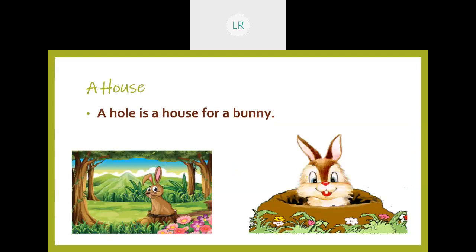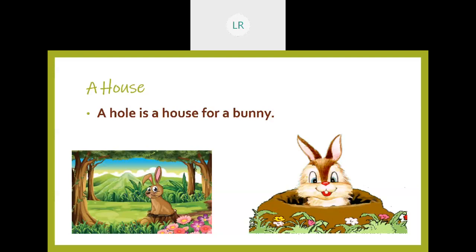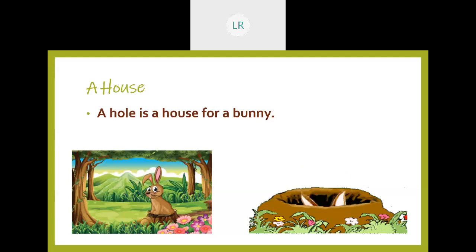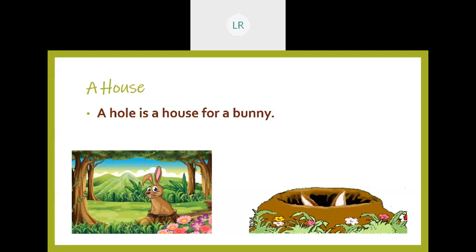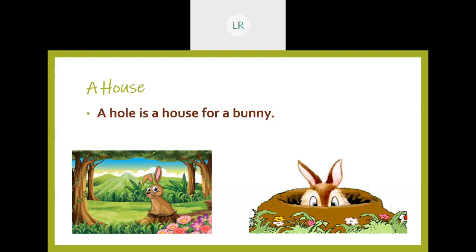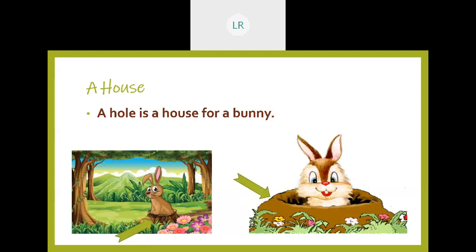And here what are you seeing? You can see two pictures. In one picture, a bunny is sitting simply. In another picture, a bunny is going in and out — it is moving, it is playing. Which is the house for a bunny? Hole is a house for a bunny. So a hole is a house for a bunny. And where is the hole? Here is a hole — so the hole is a house for a bunny.